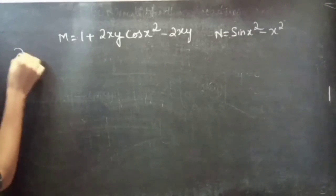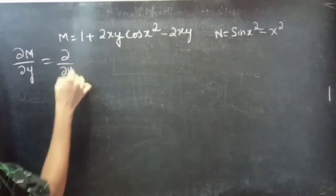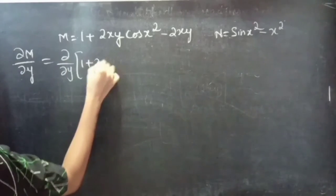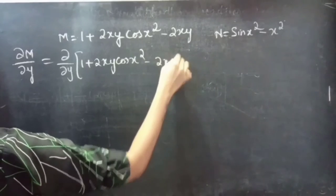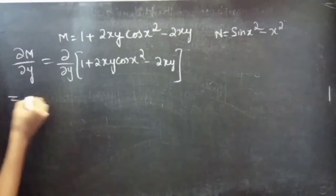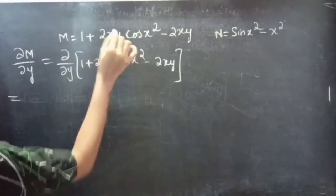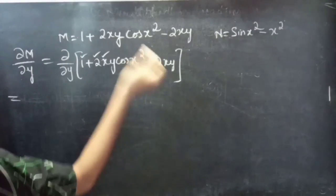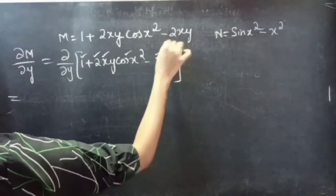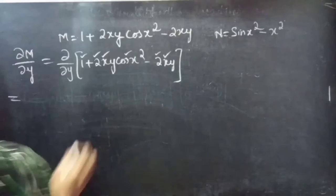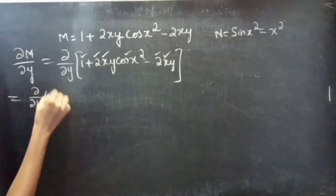Now let's find the partial derivative of M with respect to y. That is ∂M/∂y = ∂/∂y of (1 + 2xy cos(x²) - 2xy). Since we are doing the partial derivative with respect to y, we treat x as constant. So 1 is a constant, cos(x²) is a constant, and 2x is also a constant.